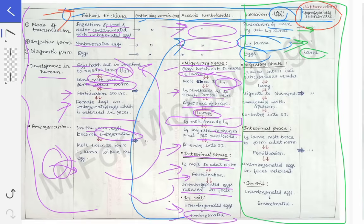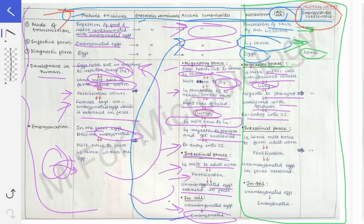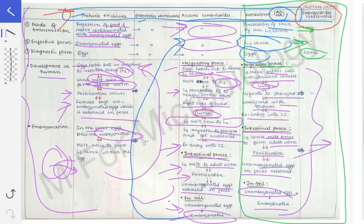In the migratory phase of hookworm, the L3 larval stage enters subcutaneous venules when it penetrates through the skin, then through the portal vein reaches the liver, from there to the lungs, then migrates to the pharynx, and through sputum is swallowed again — just similar to Ascaris lumbricoides. It re-enters the small intestine. In the intestinal phase, the L3 larva molds twice to form the adult worm, fertilization occurs, and unembryonated eggs are released in the feces.